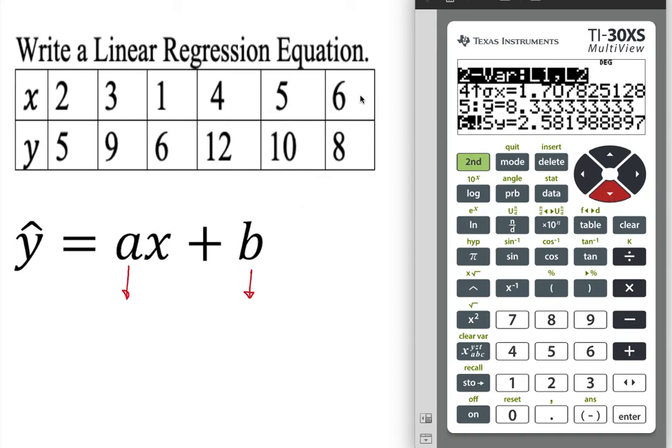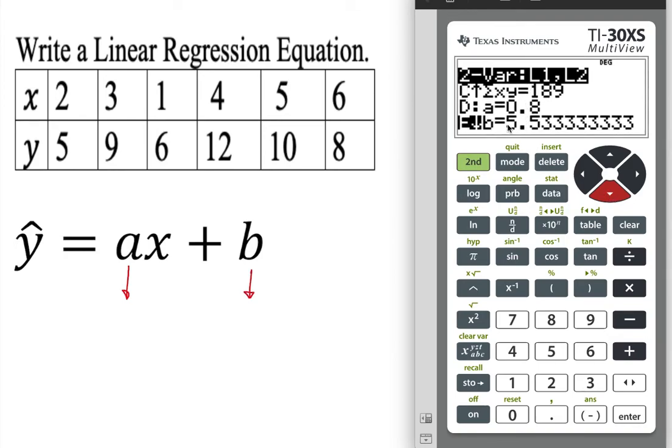We can use this information as you see, but we are only interested in these two. So what are these two? a is the slope, b is the y-intercept.